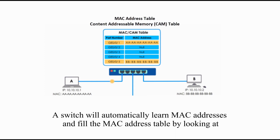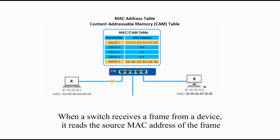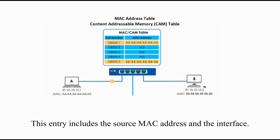A switch will automatically learn MAC addresses and fill the MAC address table by looking at the source MAC address of the incoming frames. When a switch receives a frame from a device, it reads the source MAC address and adds an entry to its MAC address table, including the source MAC address and the interface.